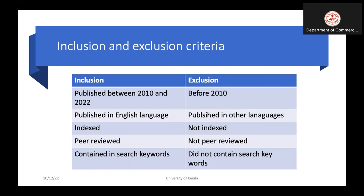We also use search keywords. For example, if you are doing research on nudging, keywords like 'nudging' are searched in the electronic databases. Whether or not keywords were used is also part of the criteria. So the inclusion and exclusion criteria cover: year-wise, language-wise, indexation-wise, theory-based, and search keyword criteria.